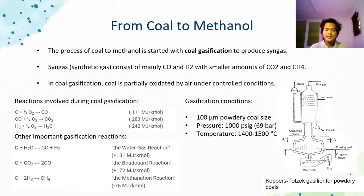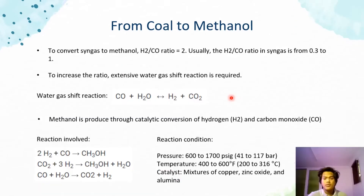This syngas consists mainly of carbon monoxide and hydrogen gas, with smaller amounts of carbon dioxide and methane. Usually, the ratio of hydrogen gas to carbon monoxide in the syngas is from 0.3 to 1. To convert this gas to methanol, the ratio must equal 2, and to increase this ratio, extensive water gas shift reaction is required as shown in this slide.